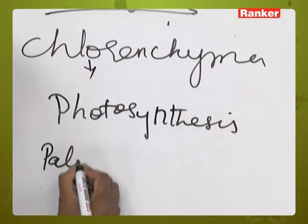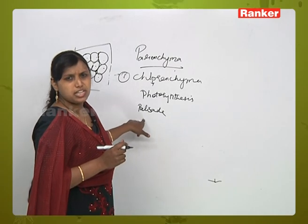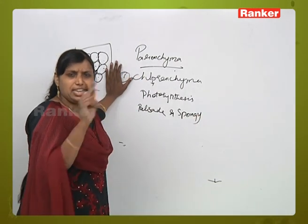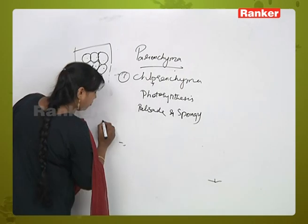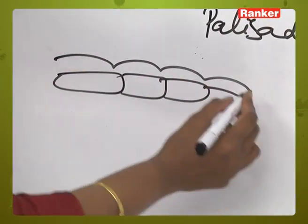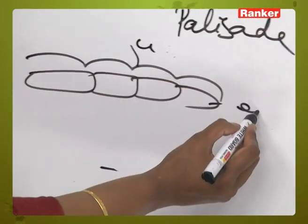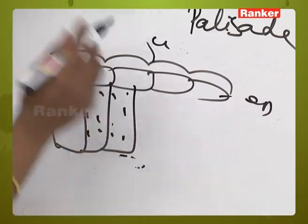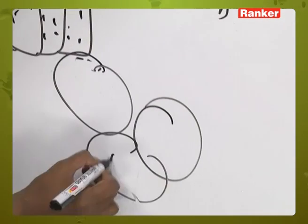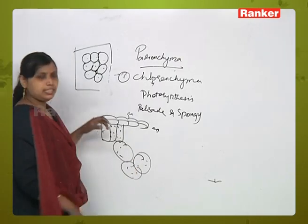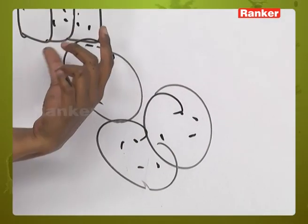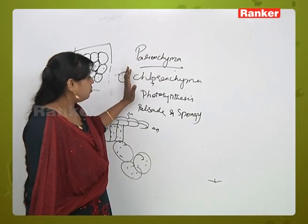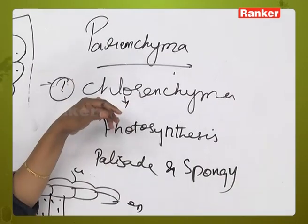Chlorenchyma tissues are seen in palisade and spongy parenchyma. When we take the TS section of a leaf, we see cuticle, epidermis, and palisade tissue, followed by spongy tissue. In both monocot and dicot leaves, the palisade tissue has barrel-shaped cells which are helpful in photosynthesis. This type of parenchyma is called chlorenchyma.